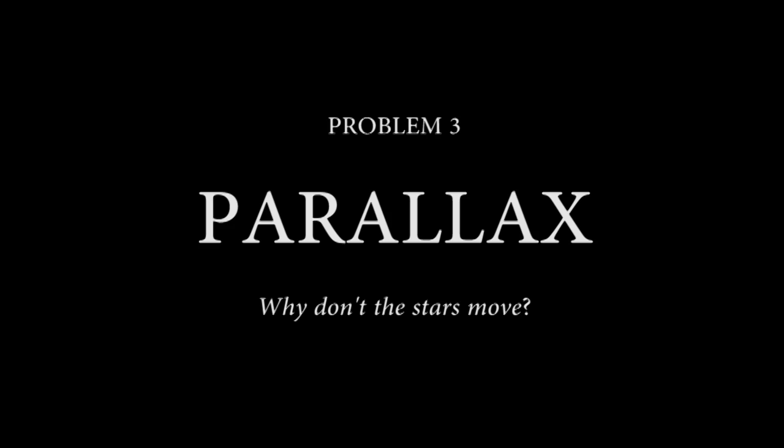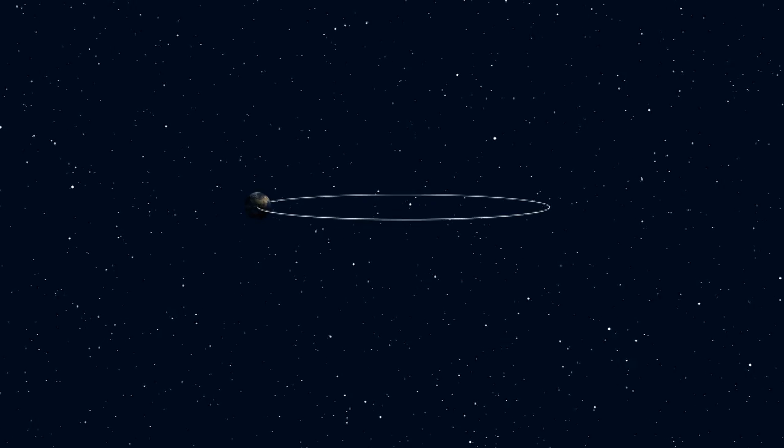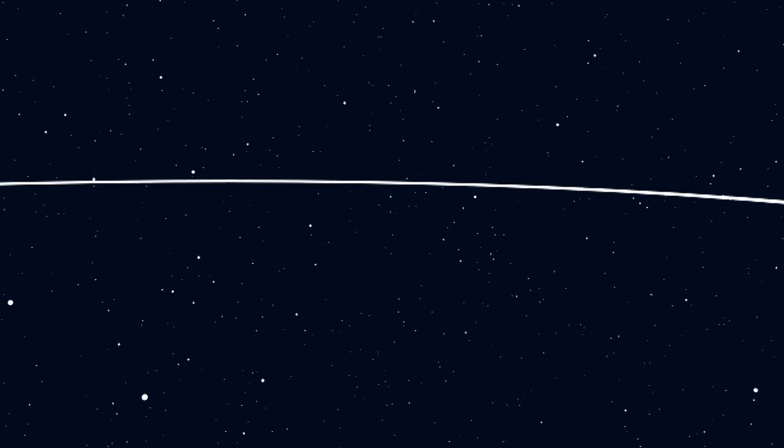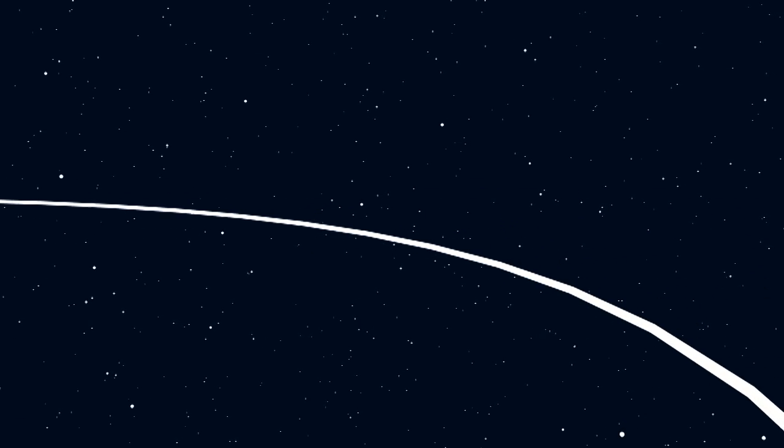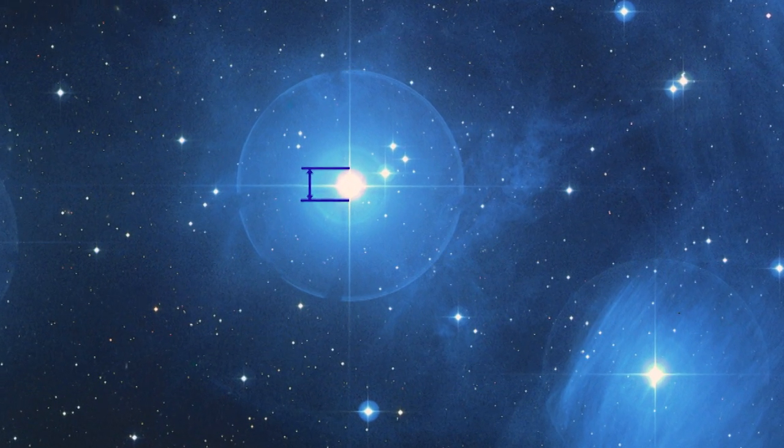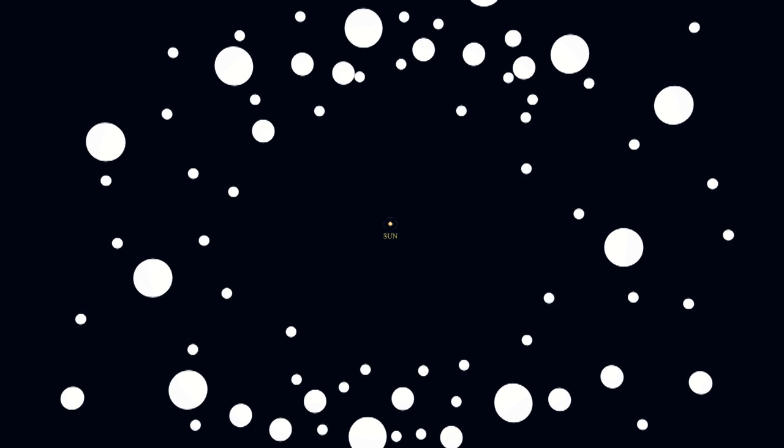Third, parallax. If we're moving so fast, then why don't we see the stars change positions as we move? This is called parallax. You might think that it's just because the stars are really far away. But then we'd expect the stars to be pinpoints of light. In telescopes, you see that they have a thickness to them, which means they'd have to be incredibly far away and gigantic.